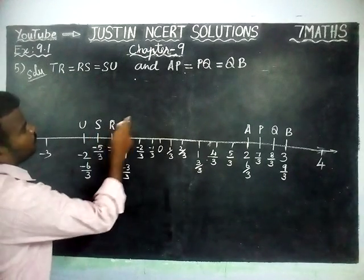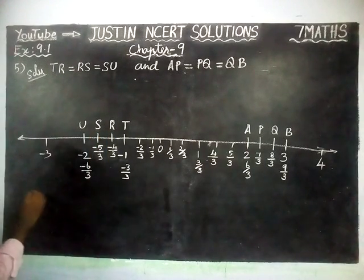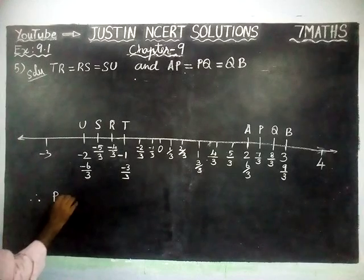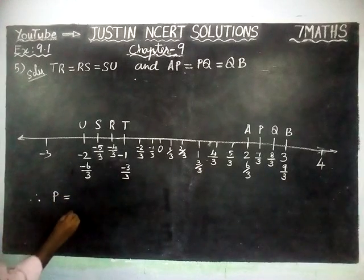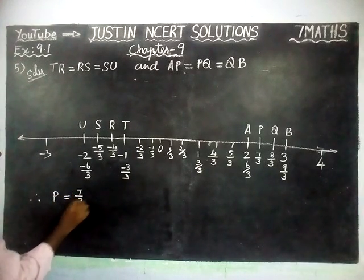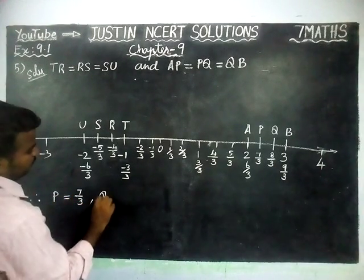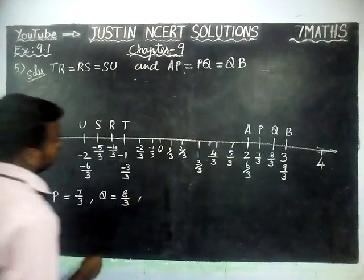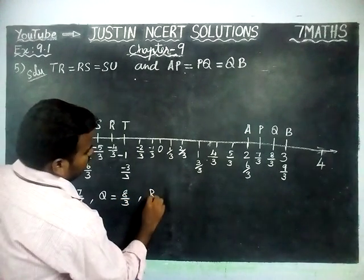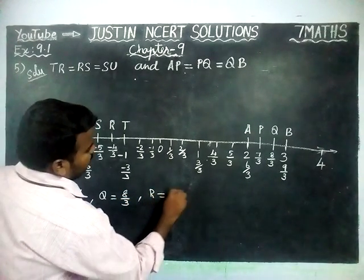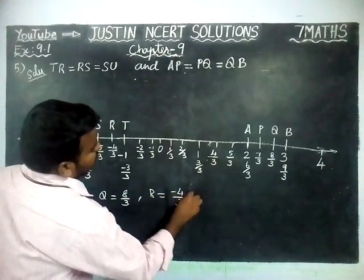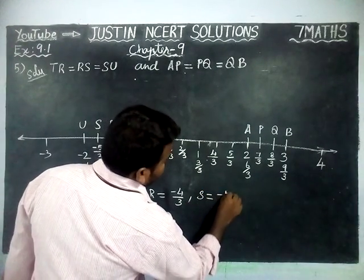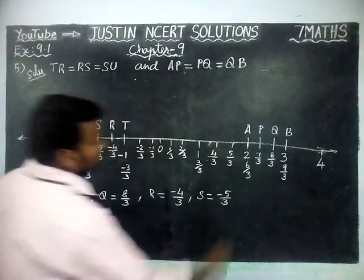So now we know the answers. Therefore: P is equal to 7 by 3, Q is equal to 8 by 3, R is equal to minus 4 by 3, and S is equal to minus 5 by 3.